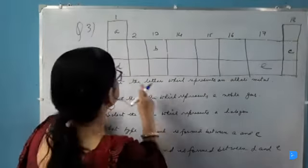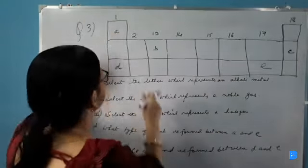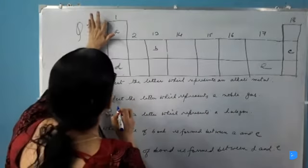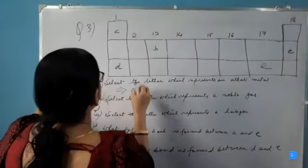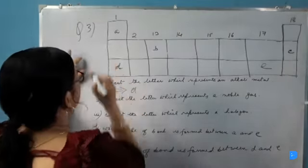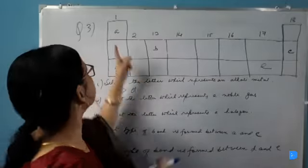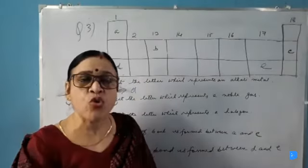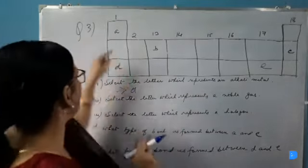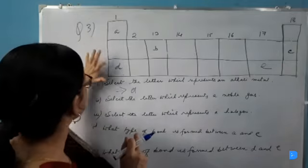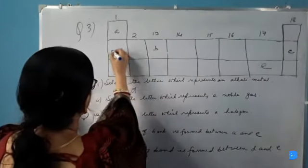Select the letter which represents an alkali metal. This is Group 1, so the Group 1 metal will be the alkali metal, so the answer will be D. A is also in Group 1, but A is hydrogen — hydrogen is placed at the top of the alkali metals, so A is not an alkali metal. D is definitely sodium.